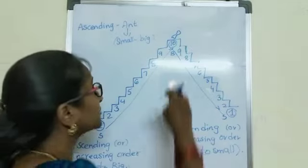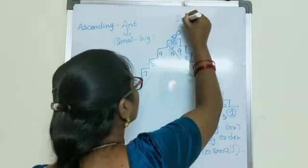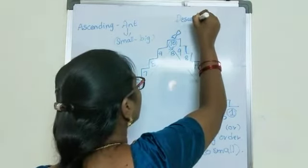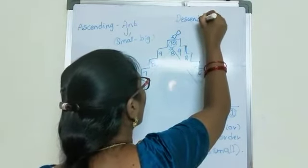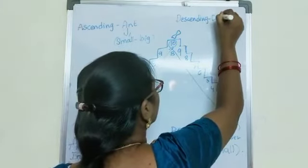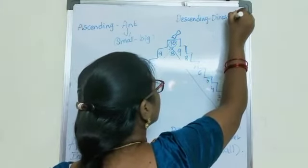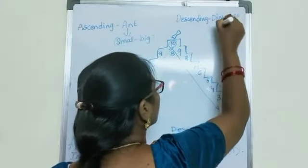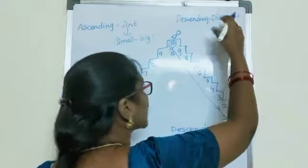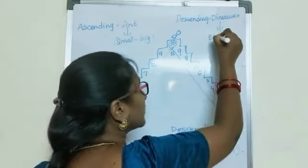Do you all know a dinosaur? How will a dinosaur be, children? Very big. So, dinosaur means descending order. That means dinosaur is big — big to small.